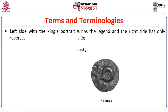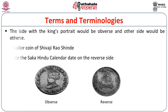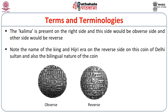In the Golier coin of Shivaji of the Shinde dynasty, the left side with the king's portrait is the obverse side, and the other side with the Shaka Hindu calendar date is the reverse. In Muslim coins, the Kalima is present on one side, which is the obverse, as Kalima is the most important feature of Muslim coins. On the reverse of Delhi Sultanate coins, the name of the king and Hijri era can be noted, and the bilingual nature of the coin can also be observed on the reverse side.